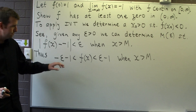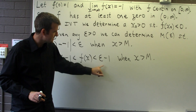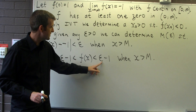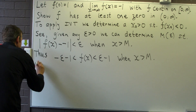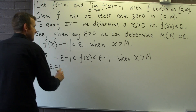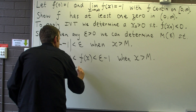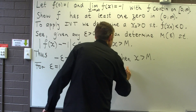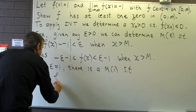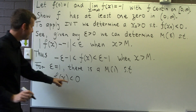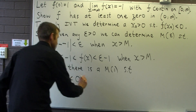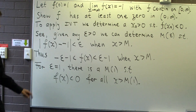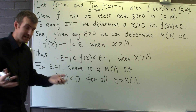What we're trying to do is make this expression less than 0, because then f of x will be negative. So we can choose epsilon equals 1. Given epsilon equals 1, we know there's a number m that depends on 1, such that f of x is less than 0 for all x greater than m of 1. So in other words, if we go past this point m of 1, whatever it is, f of x has got to be negative.